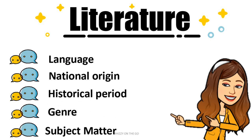Literature can be classified according to a variety of systems such as language, national origin, historical period, genre, and subject matter.